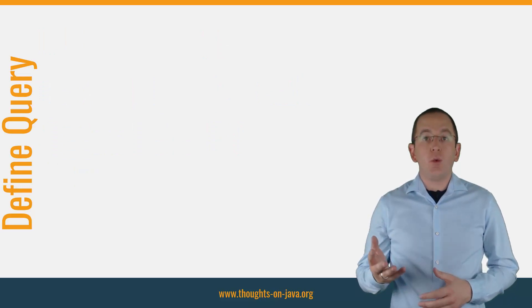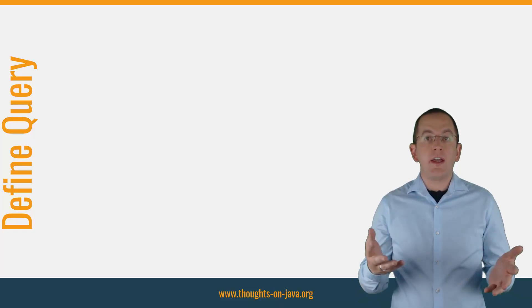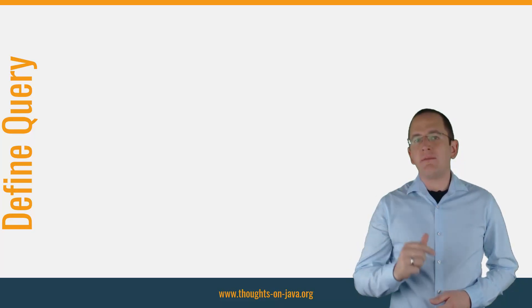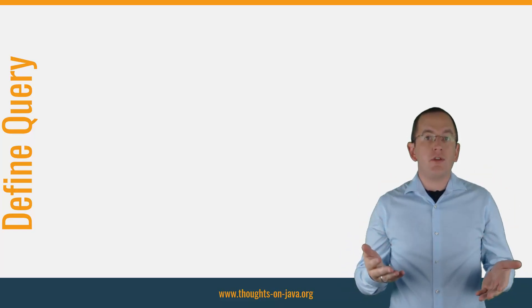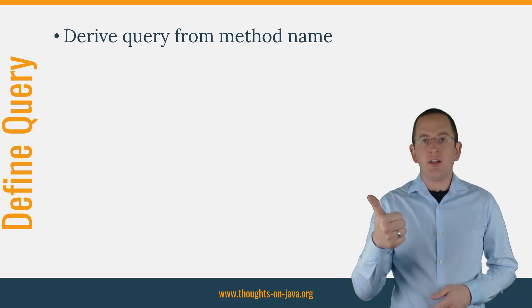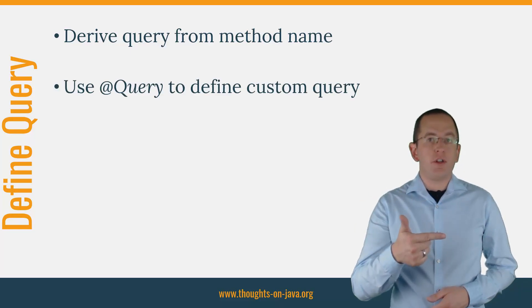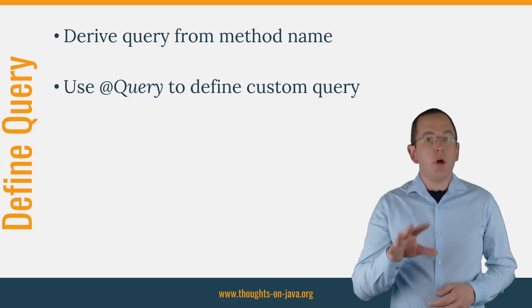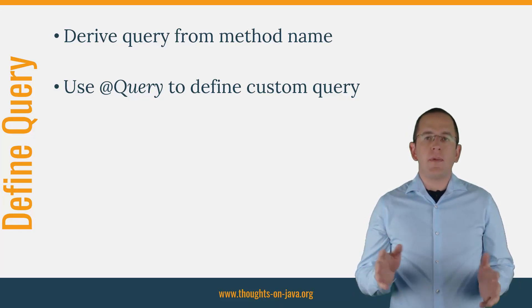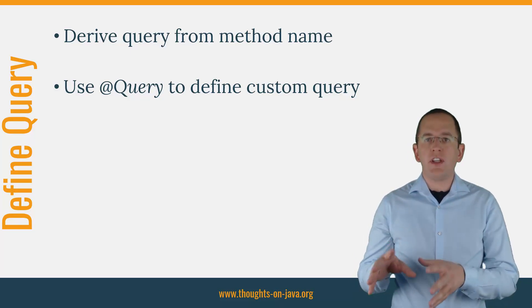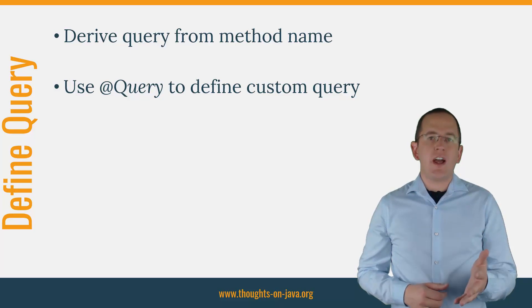All applications need to execute queries to retrieve data from their database. With JPA and Hibernate, you can write JPQL, native SQL queries, or criteria queries, and you can use all of them with Spring Data JPA. Spring Data JPA acts as a layer on top of JPA and offers you two ways to define your query: you can let Spring Data JPA derive the query from the name of a method in your repository, or you can specify your own JPQL or native query using a query annotation.